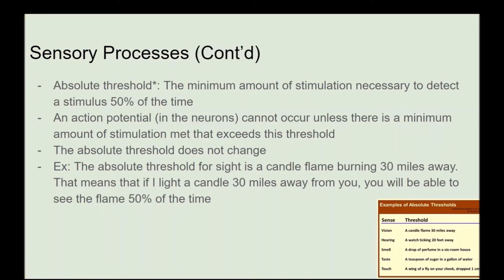When talking about sensory processes, we also want to talk about the absolute threshold, which is the minimum amount of stimulation necessary to detect a stimulus 50% of the time. An action potential in the neurons cannot occur unless a minimum amount of stimulation exceeds this threshold, and the absolute threshold does not change. For example, the absolute threshold for sight is a candle flame burning 30 miles away — meaning you'll be able to see that flame 50% of the time.